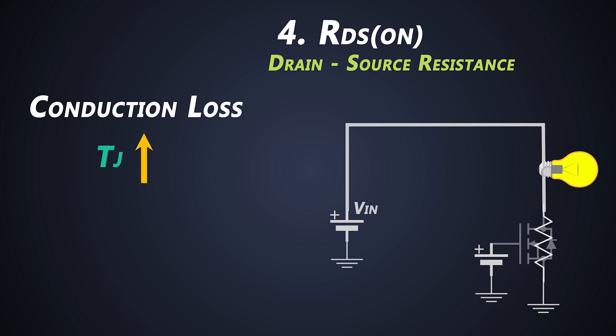This RDS(ON) increases if the VDS of a MOSFET increases. That means if we take a different MOSFET with high VDS, let's say 150V, then its RDS(ON) will definitely be higher than the MOSFET which has VDS of 40V. If we apply less VGS, still this RDS(ON) increases for the same MOSFET.